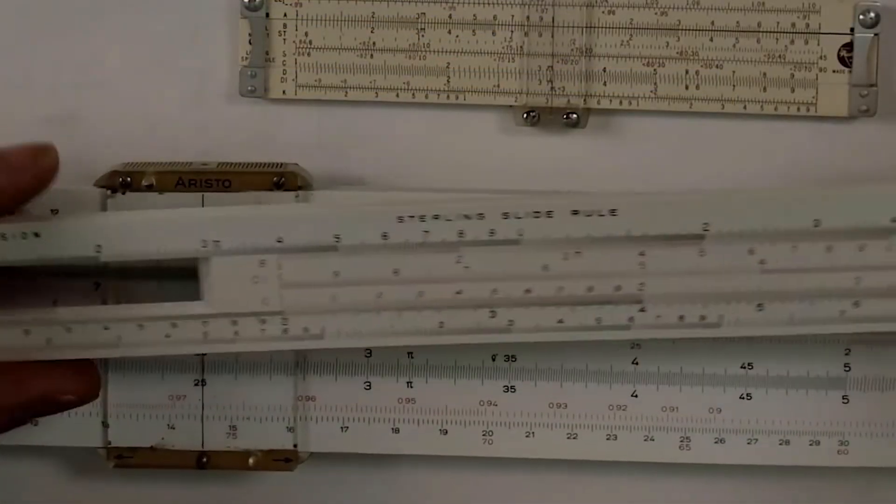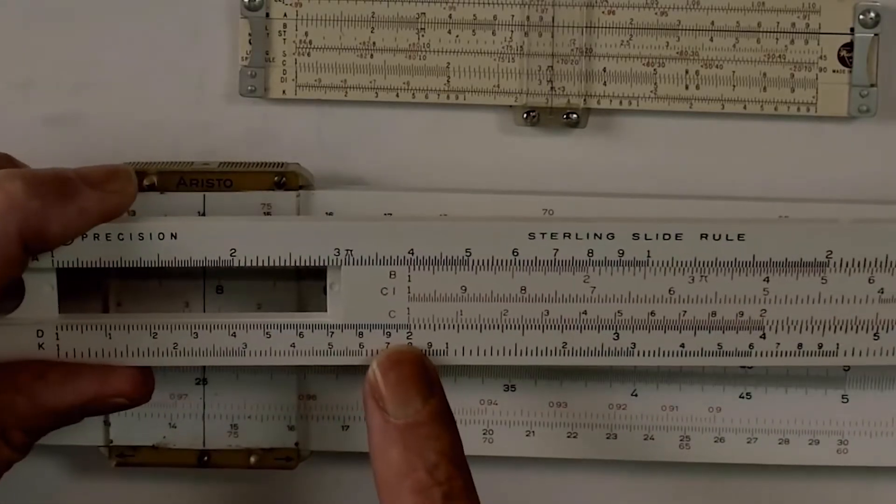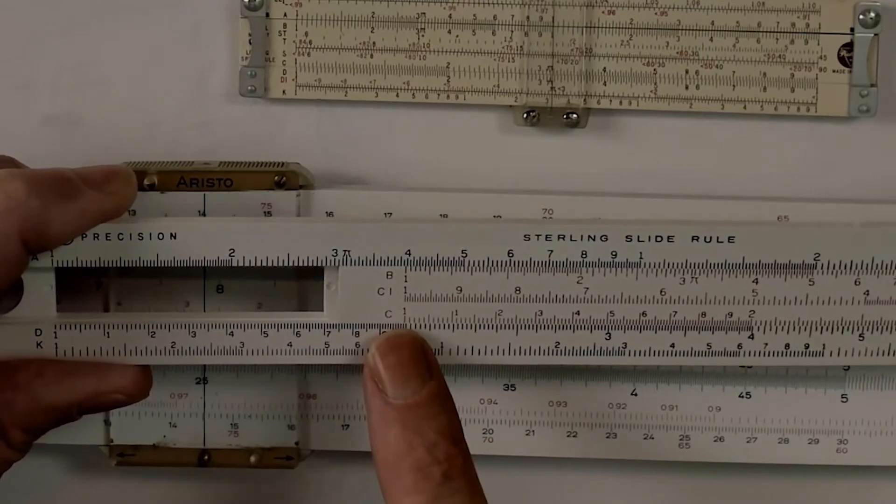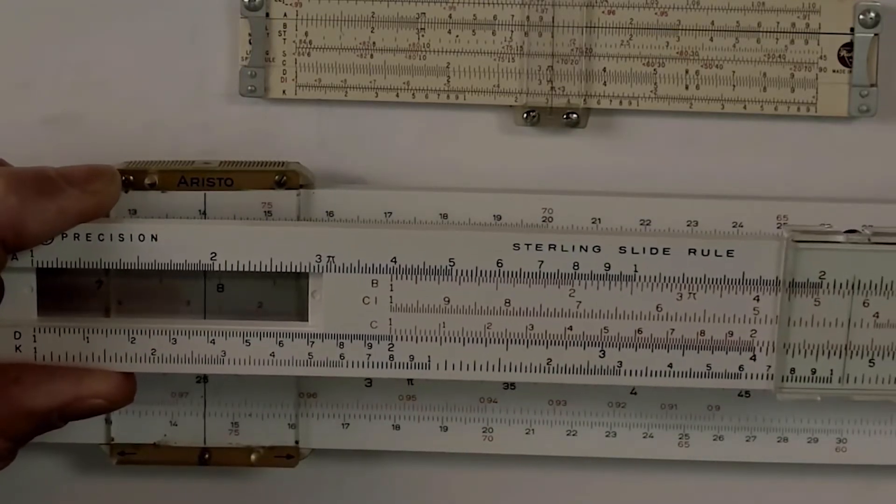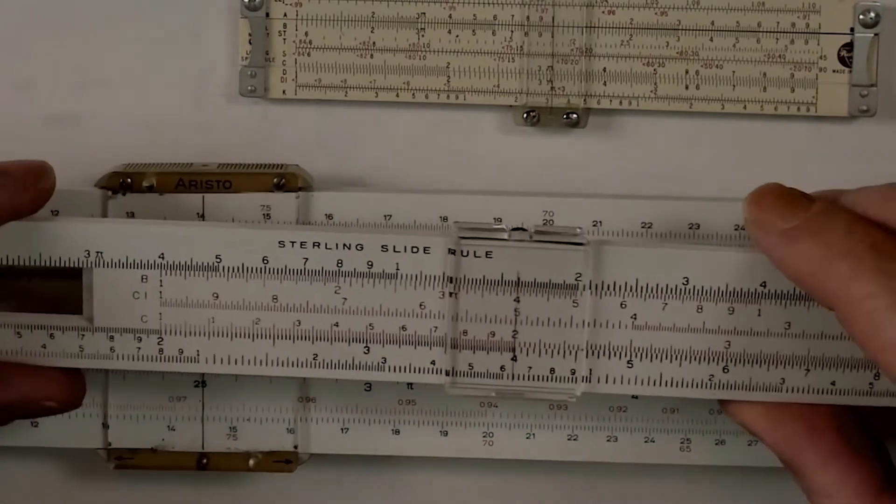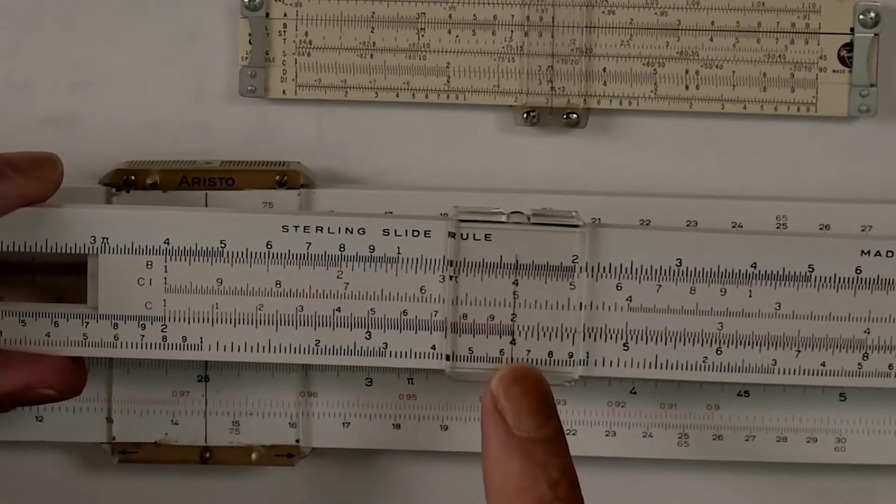For example, here we see the 2 on what's called the D scale of the slide rule. And we've placed the 1 on the C scale directly above it. By going out to 2 on the C scale, we multiply 2 by 2 and get our resulting answer of 4.